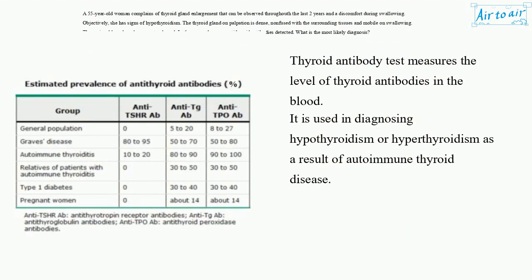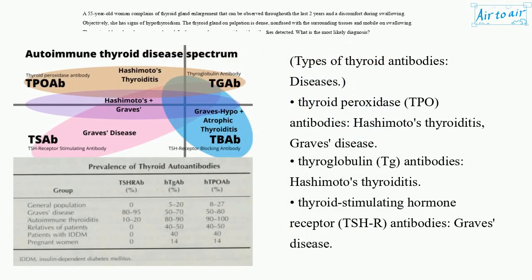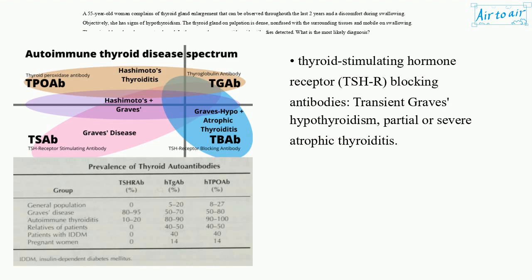A thyroid antibody test measures the level of thyroid antibodies in the blood. It is used in diagnosing hypothyroidism or hyperthyroidism as a result of autoimmune thyroid disease. Types of thyroid antibodies and associated diseases: Thyroid peroxidase (TPO) antibodies — Hashimoto's thyroiditis, Graves' disease. Thyroglobulin (TG) antibodies — Hashimoto's thyroiditis. Thyroid stimulating hormone receptor (TSHR) antibodies — Graves' disease. TSHR blocking antibodies — transient Graves' hypothyroidism (partial or severe), atrophic thyroiditis.